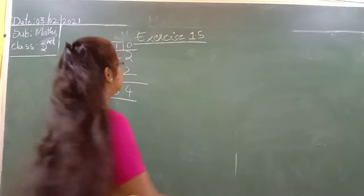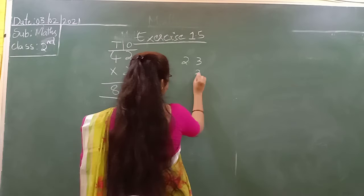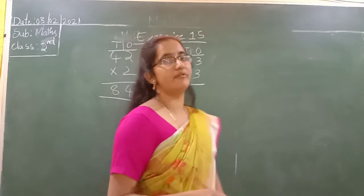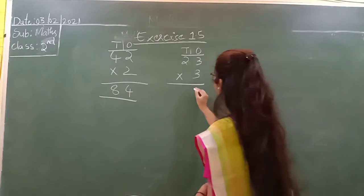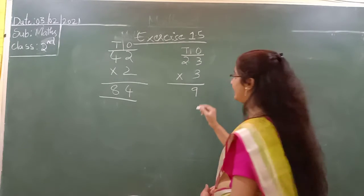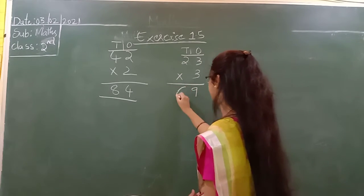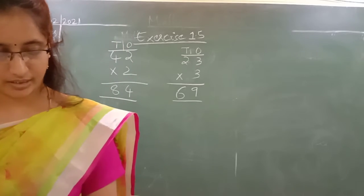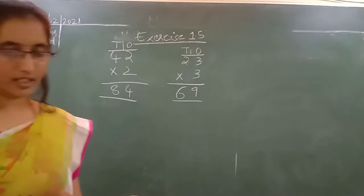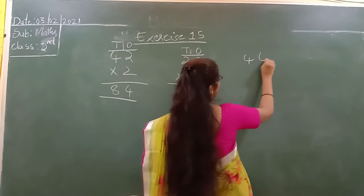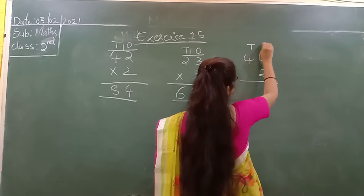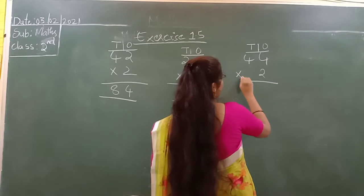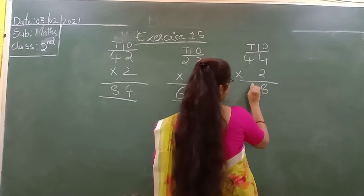Next we have to do 23 into 3. This is the 1's space and this is the 10's space. First multiply with the 1's space: 3 into 3 is 9. Next multiply with the 10's space: 2 into 3 is 6. So the answer is 69.